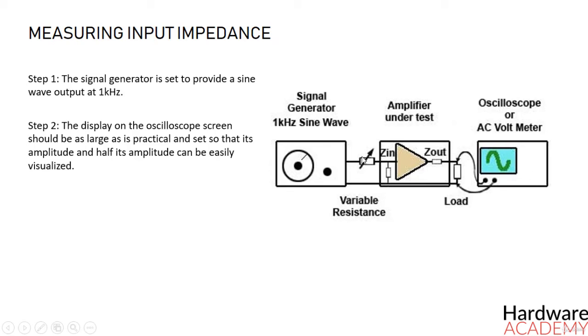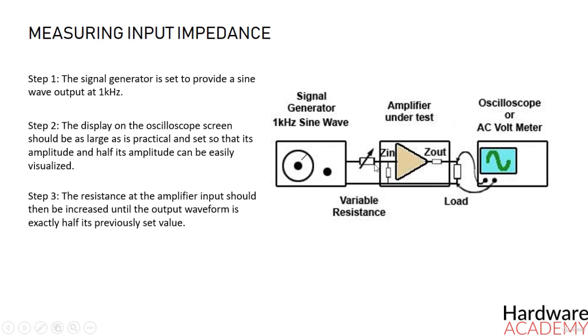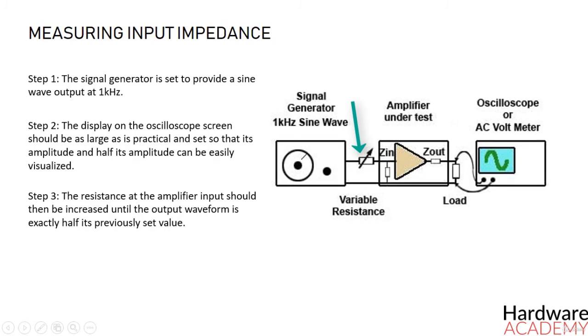The resistance at the amplifier input should then be increased until the output waveform is exactly half its previously set value. At this setting, the signal is shared equally between the test resistance and the input impedance of the amplifier, which means that the resistance and impedance are equal.